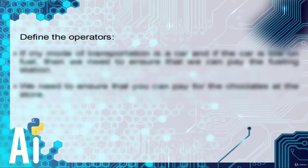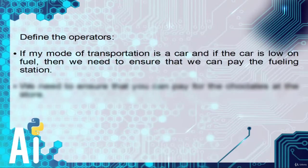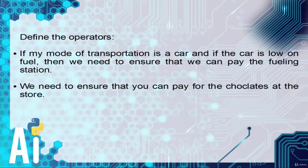The third step, defining the operators. If my mode of transportation is a car and if the car is low on fuel, then we need to ensure that we can pay the fueling station. And also, we need to ensure that you can pay for the chocolates at the store. In this way, a general problem is reduced into three steps and the problem is solved.